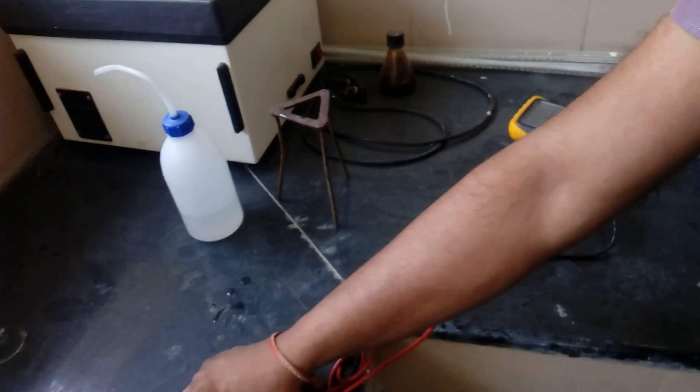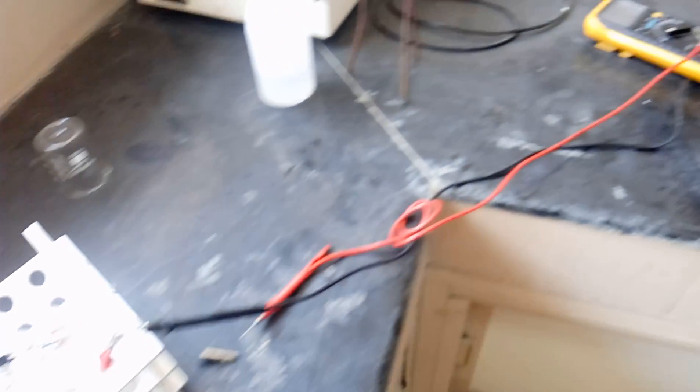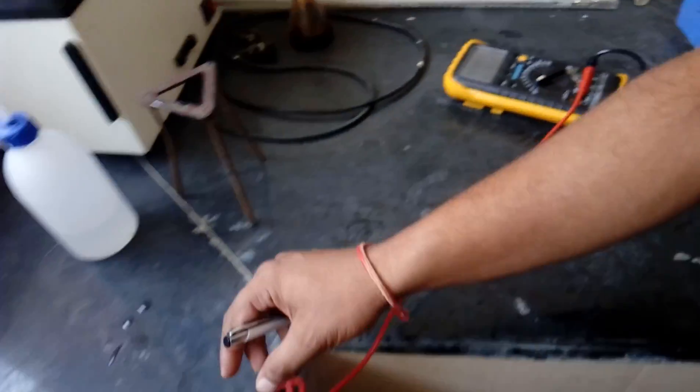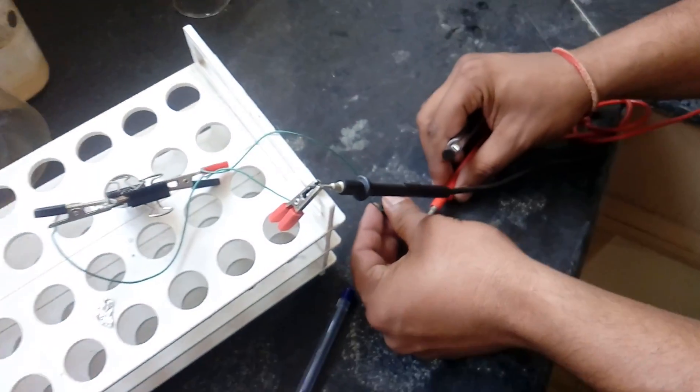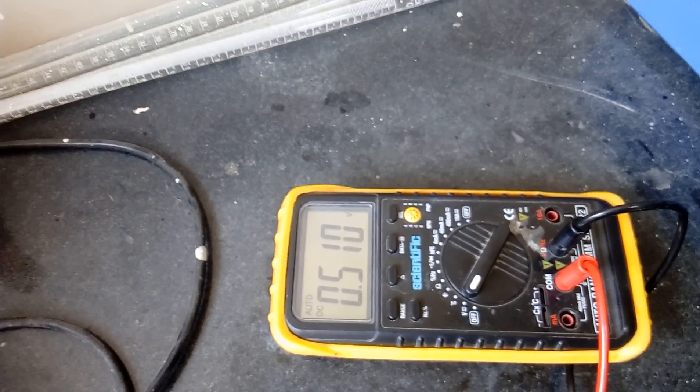If we disconnect this circuit the voltage is zero, and again we reconnect the circuit, the output voltage is 0.1511 volt.